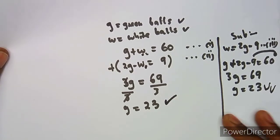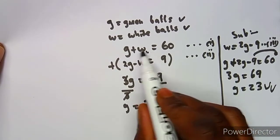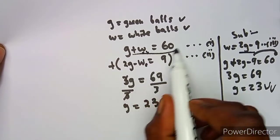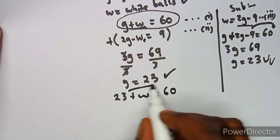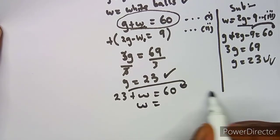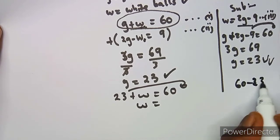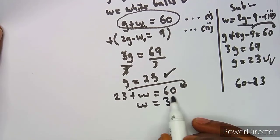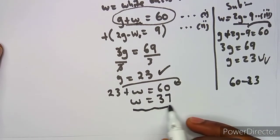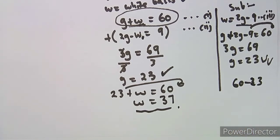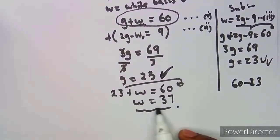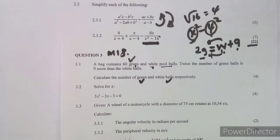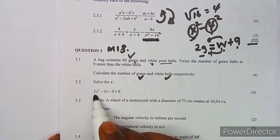With g = 23, substitute back into the first equation: 23 + w = 60, so w = 60 − 23 = 37. Therefore, the number of green balls is 23 and the number of white balls is 37.